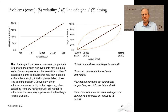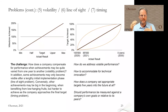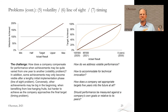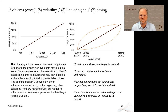Then we have the problem of volatility because for each target that you have, you have to set a minimum, a threshold, a maximum performance. If you have a lot of volatility, you may end up being at maximum or minimum in oscillating years — one year is everything and then it's nothing. And what do we do with volatility? What do we do with line of sight? What do we do with timing?